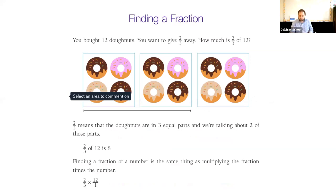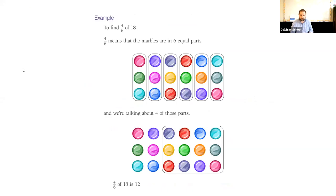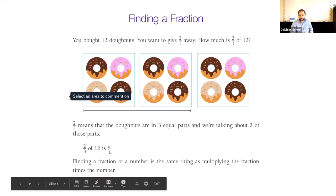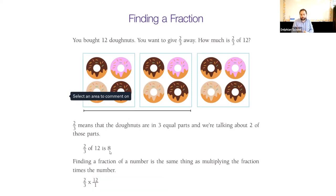Here's another way to look at it — finding a fraction. Let's say you bought 12 donuts and you want to give two-thirds away. How much is two-thirds of 12? So we have 12, we break it up into three pieces. Now this is one-third, two-thirds, three-thirds. If we want two-thirds of 12, we have those two groups, and we can see that's eight donuts. So two-thirds of 12 is eight.